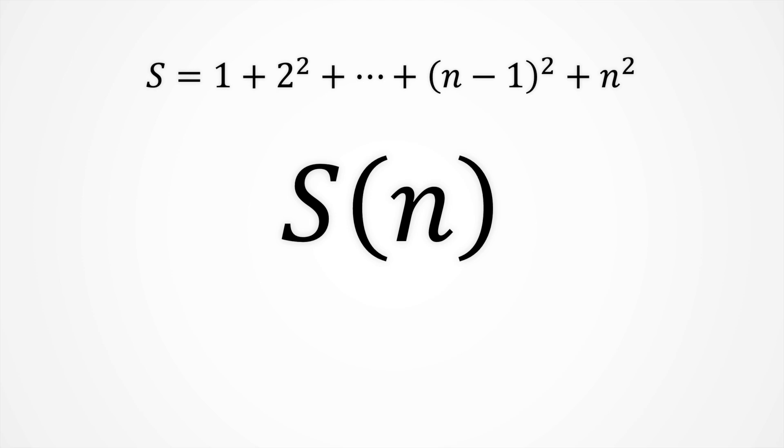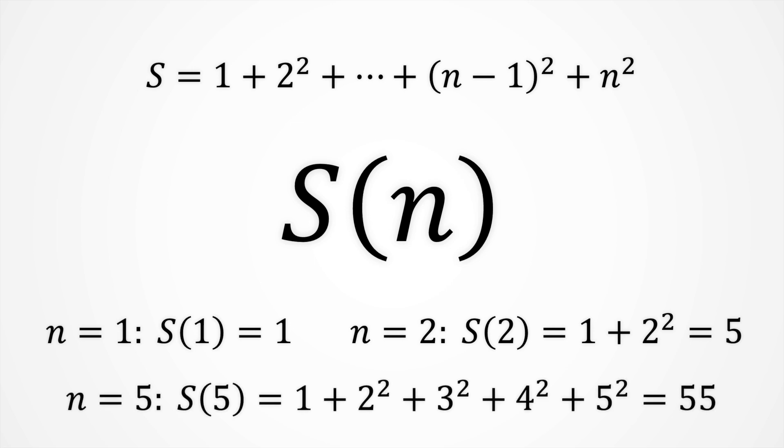For example, s of 1 is equal to 1, as we reach only the sum till 1. s of 2 equals 1 plus 2 squared, which is 5. And s of 5 takes the sum up to 5 squared, and we have 55.